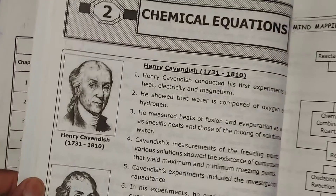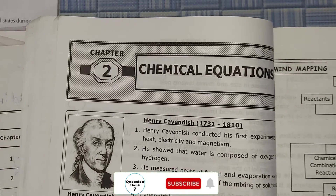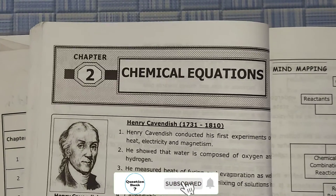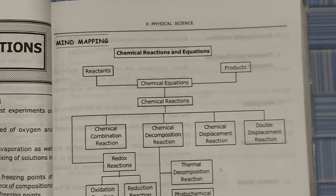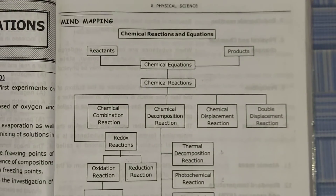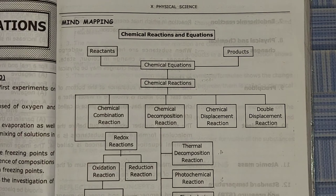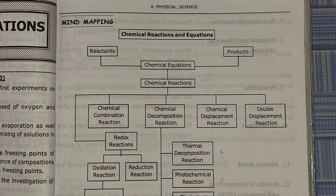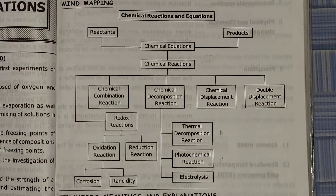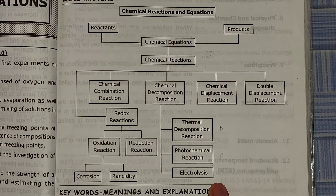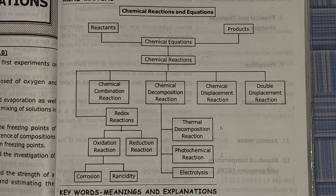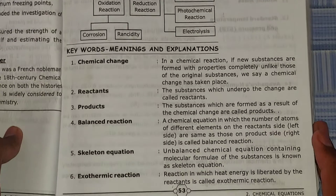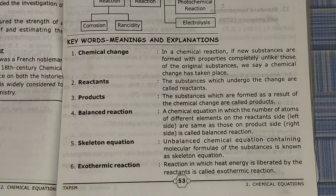You can see Chemical Reactions here. First we'll see the mind mapping — you can see here we have a clear mind mapping. Now we'll move up and you can see after the mind mapping we have keywords, meaning and explanation.